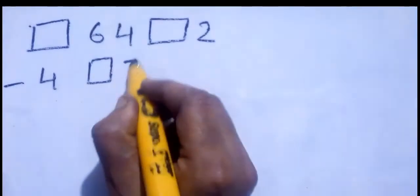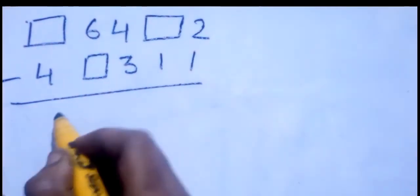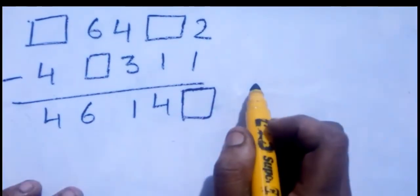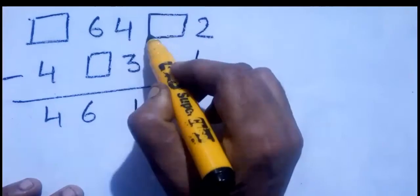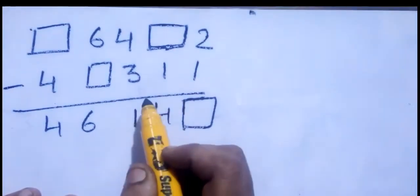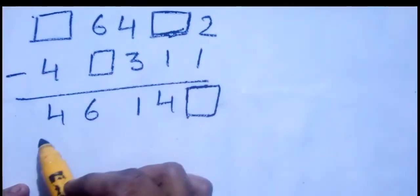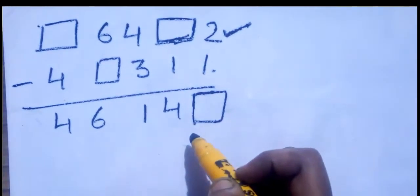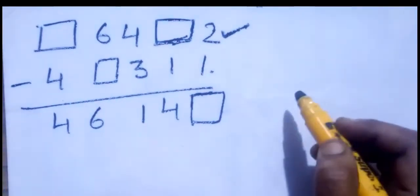The first example is to find the missing digit. The first digit is missing: 6 4 [box] 2 minus 4 [box] 3 1 1, and when you subtract you get 4 6 1 4 [box]. You have to find all the missing digits. The method is the same as checking subtraction — the answer should be added to the second number so that you get the first number.